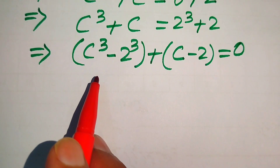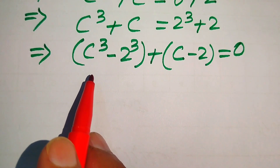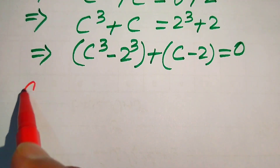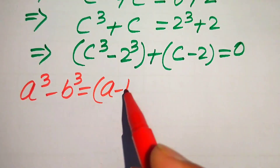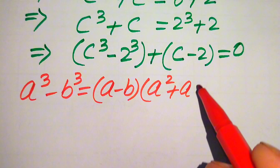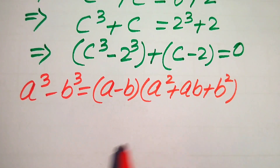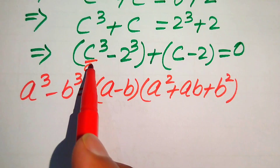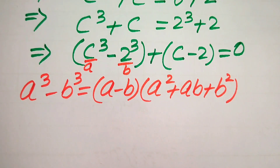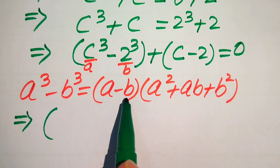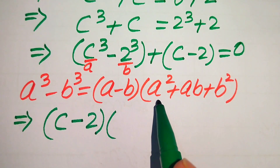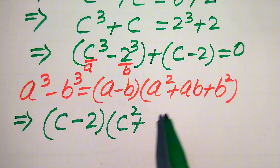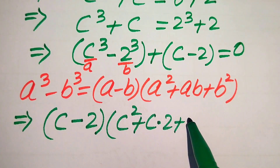We apply the cubic formula. You know that a cubed minus b cubed equals (a minus b)(a squared plus ab plus b squared). Here the base of the first cubic term is a, and the base of the second is b.